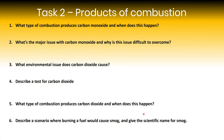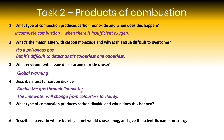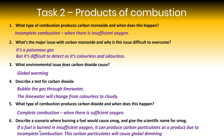The type of combustion that produces carbon monoxide is incomplete combustion, occurring when there is insufficient oxygen. The major issue with carbon monoxide is that it's poisonous and difficult to detect because it's colourless and odourless. The environmental issue caused by carbon dioxide is global warming. To test for carbon dioxide, bubble the gas through lime water — it will change from colourless to cloudy if carbon dioxide is detected. Complete combustion produces carbon dioxide and occurs when there is sufficient oxygen. If a fuel is burned in insufficient oxygen it can produce carbon particulates due to incomplete combustion, causing global dimming.